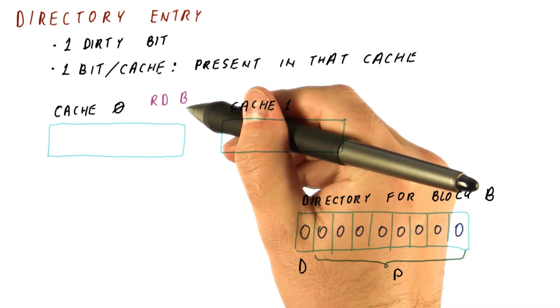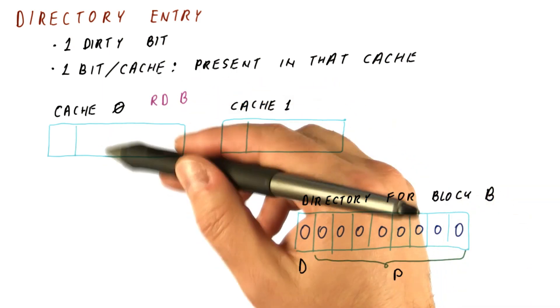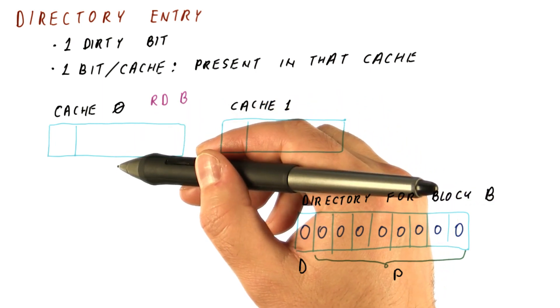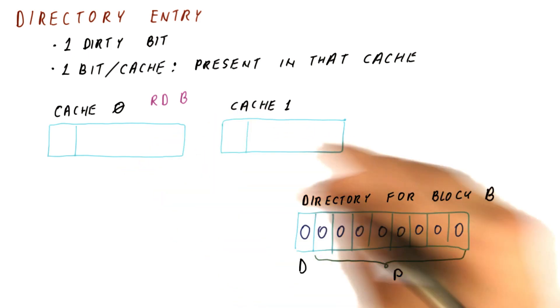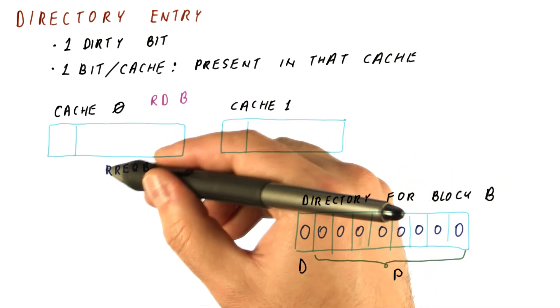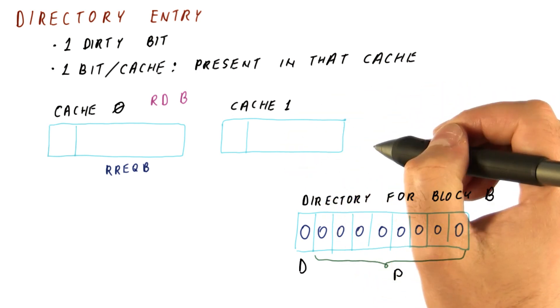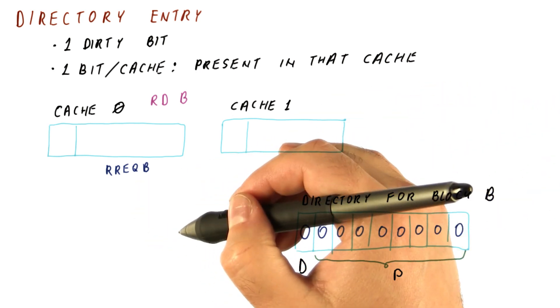Let's say that core zero reads from the block B. The block is not in its cache, so it's treated like it's in the invalid state. We put the read request out. Normally, this read request will be put out on the bus. And because no other cache has this, the memory would respond.